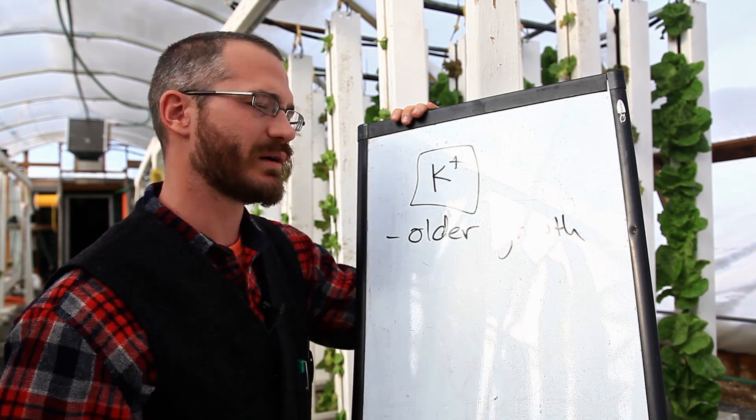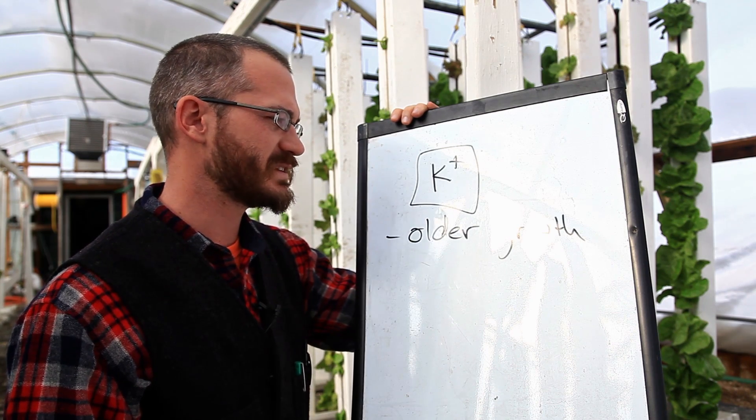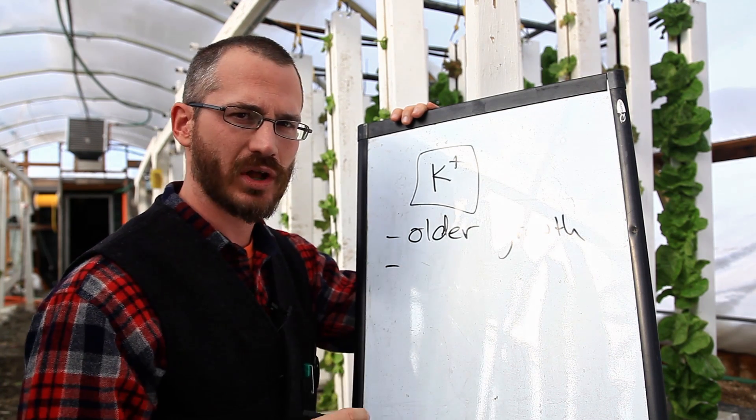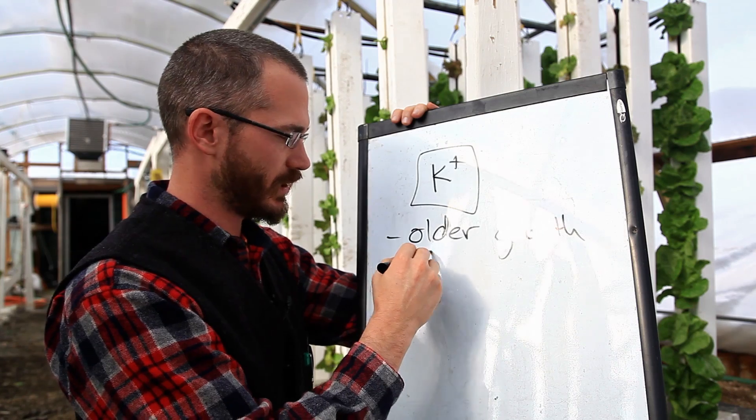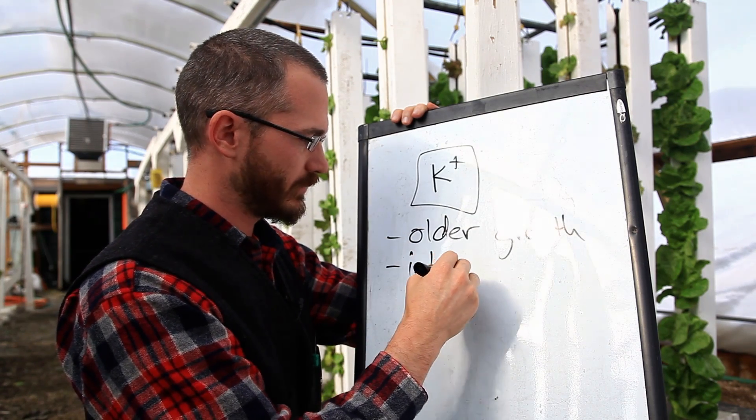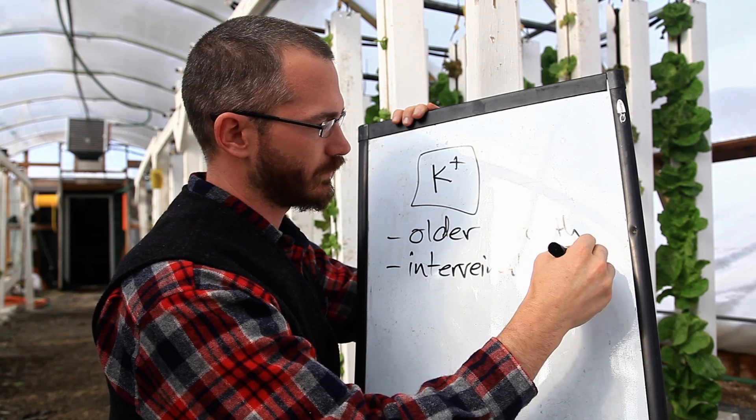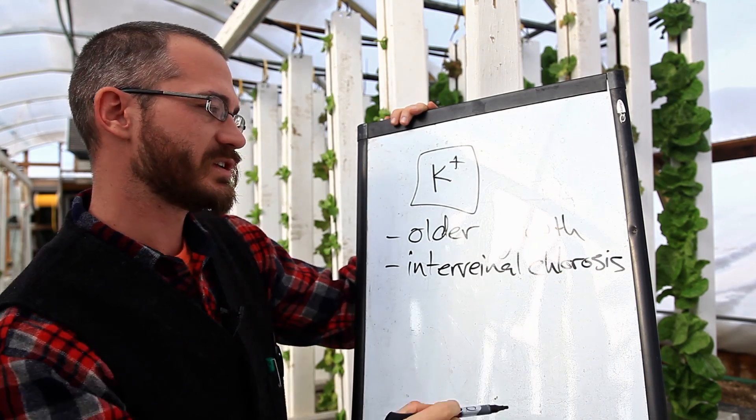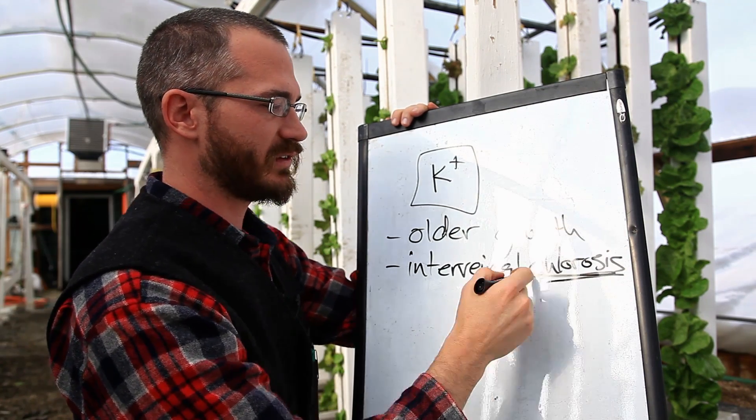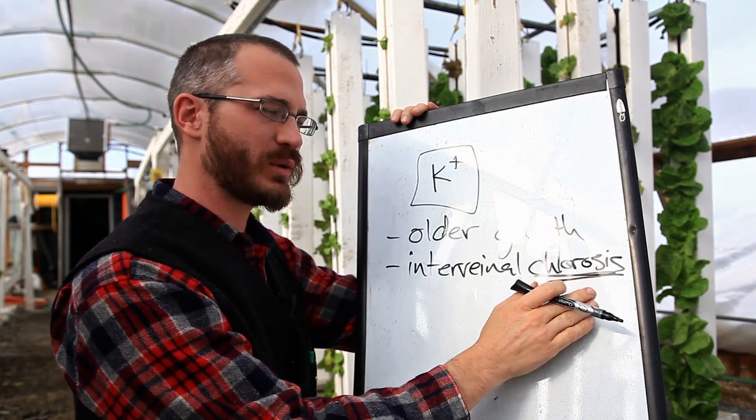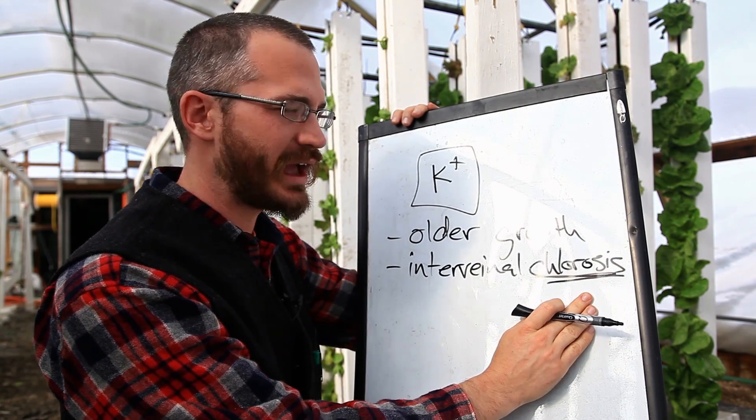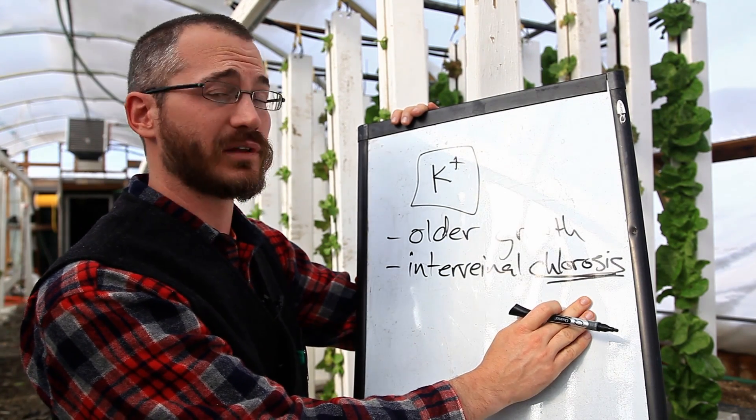And potassium, like a lot of other deficiencies, is characterized by interveinal chlorosis. I'm going to try and spell it here. This basically just means yellowing. Chlorosis is yellowing. And we get yellowing with nitrate deficiency, we get yellowing with all sorts of other things, including iron.